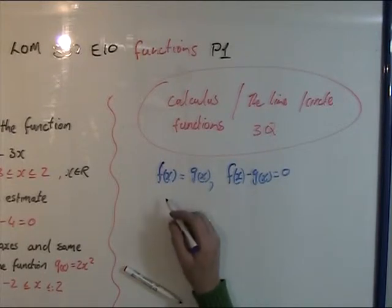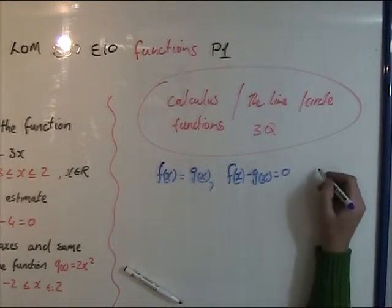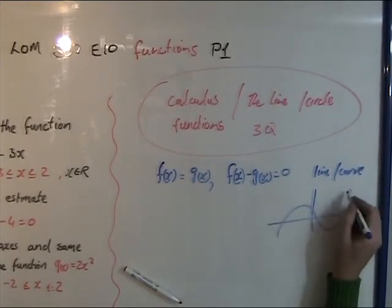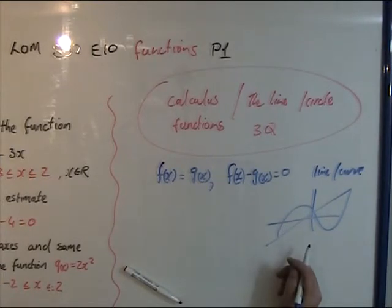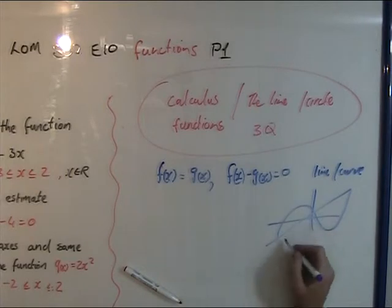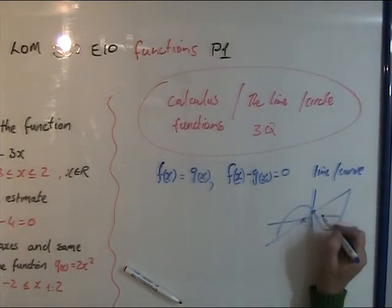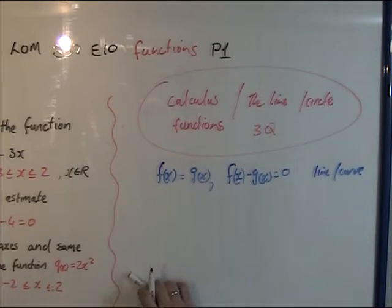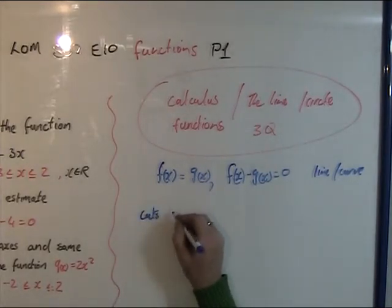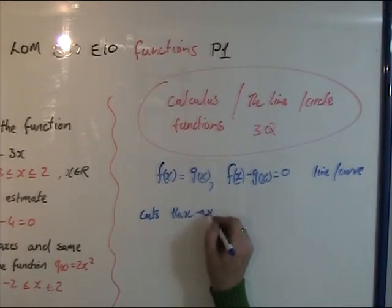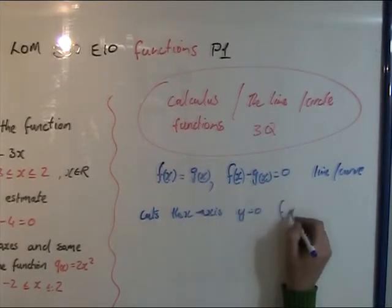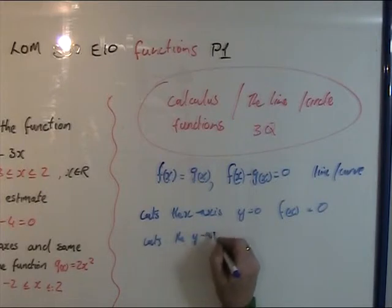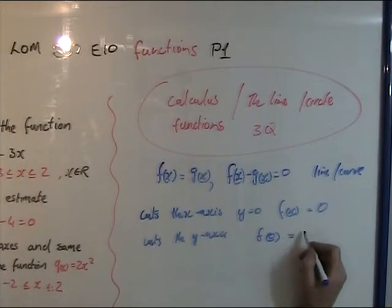I will get back to this because we can now solve between a line and a curve — we could solve the point of intersection between the line and the curve. You can find where it cuts the x-axis and where it cuts the y-axis. Making it equal to zero for the x-axis, and x is equal to zero for the y-axis. So when it cuts the x-axis, y is equal to zero, so you make the function equal to zero.